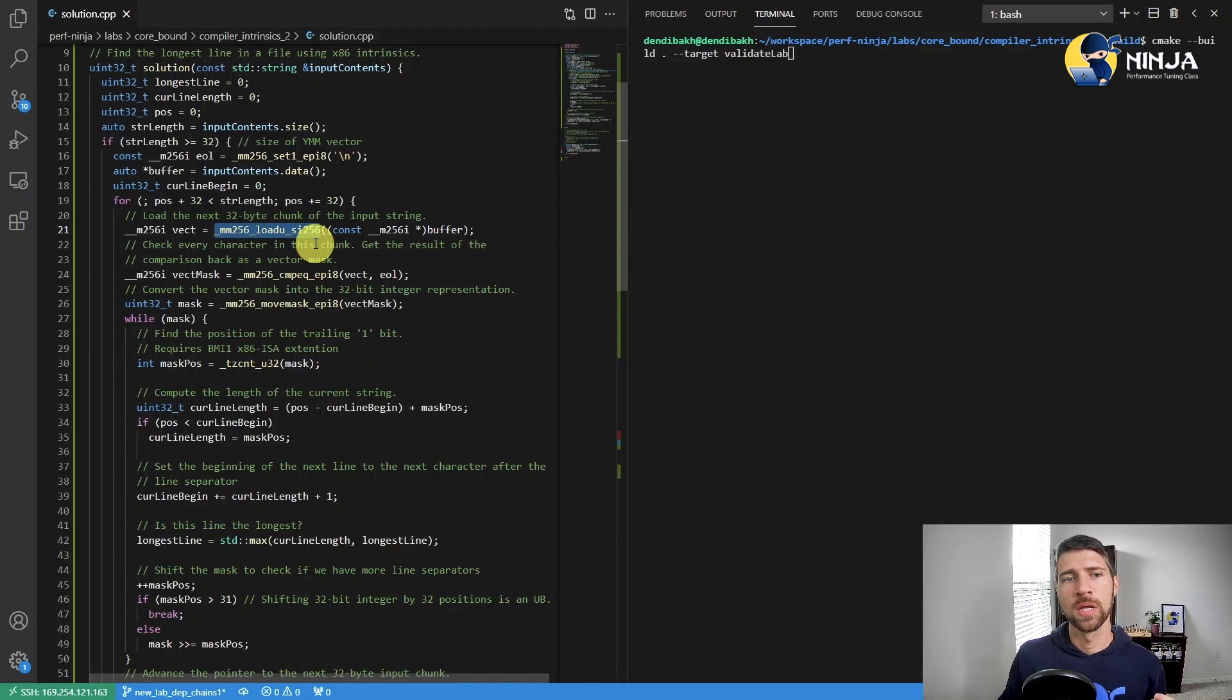And this solution is for AVX2, which processes 32 characters at a time. This code is well documented. So feel free to pause the video and take a closer look at the code. And also I will copy paste this code into the comment section under this video.